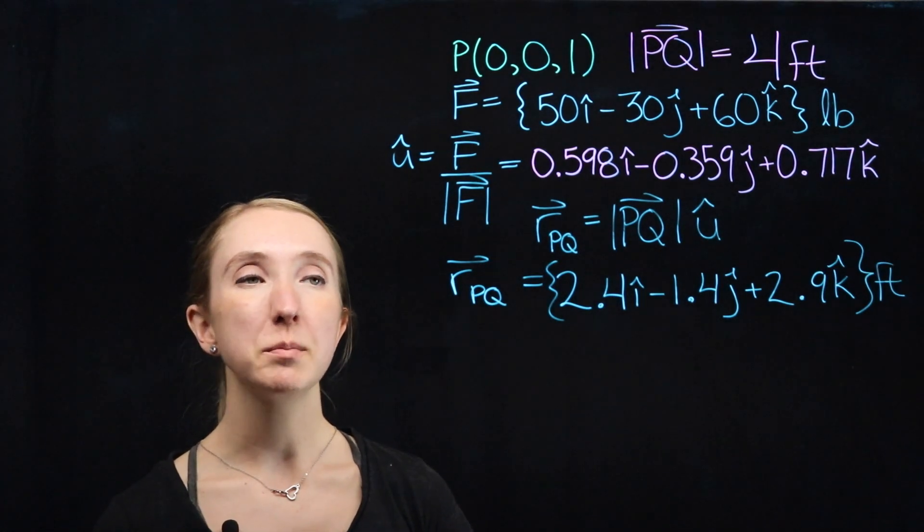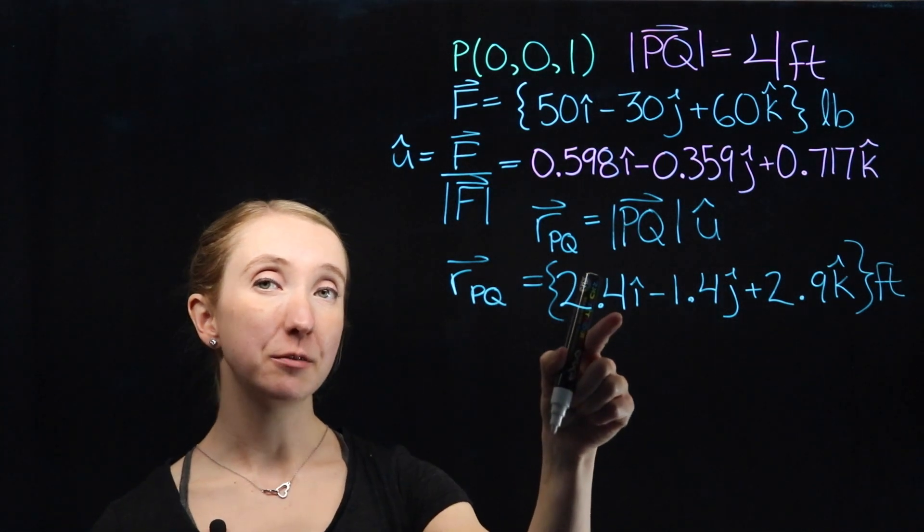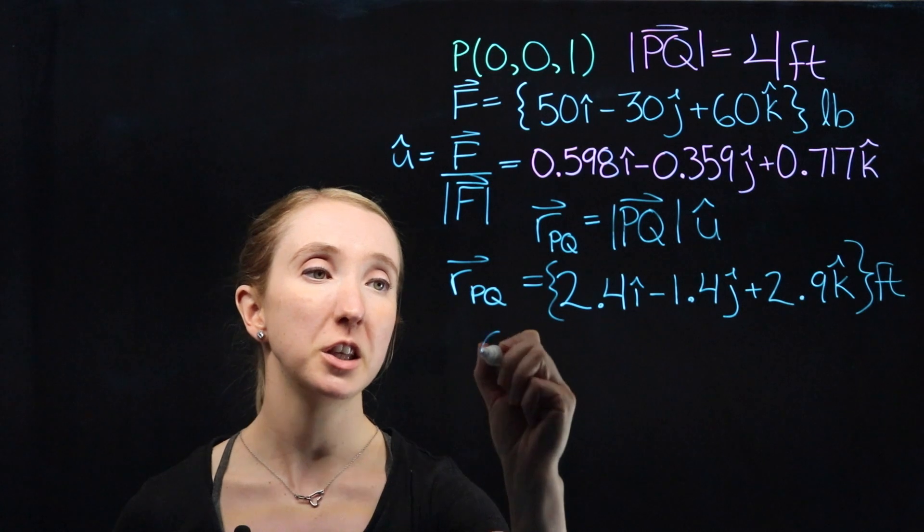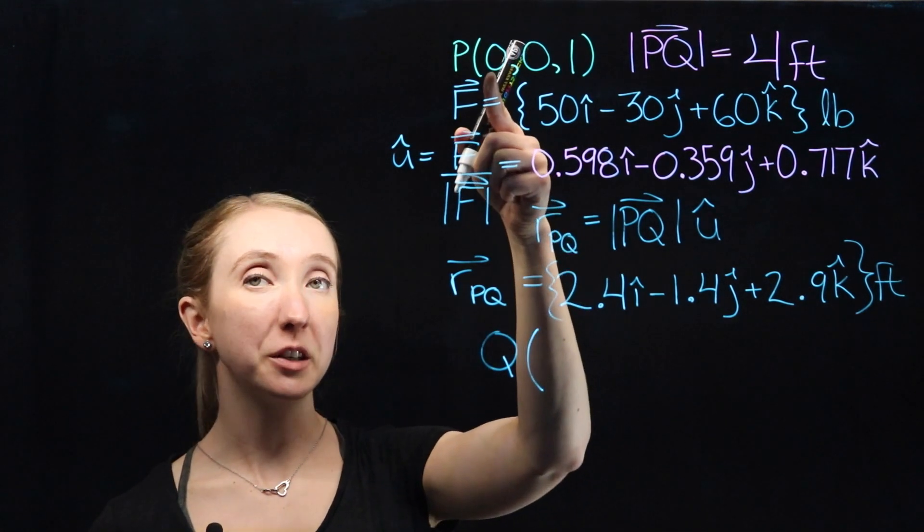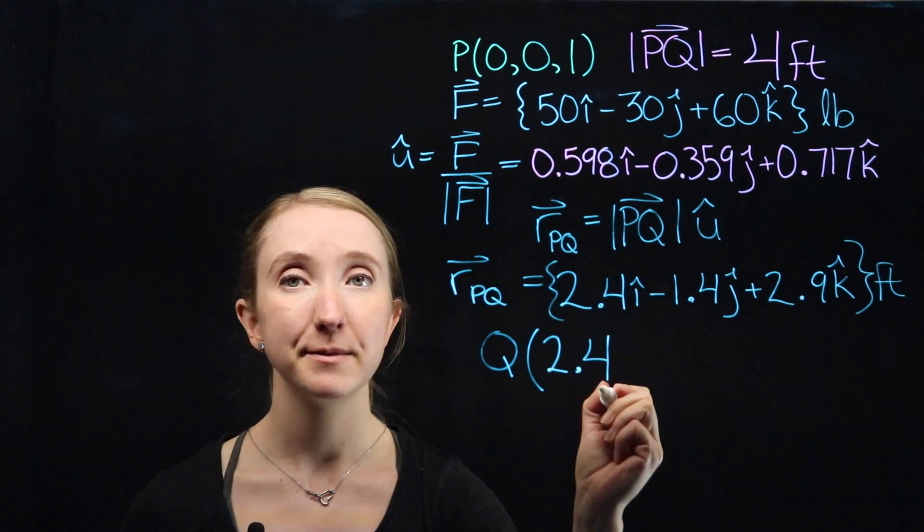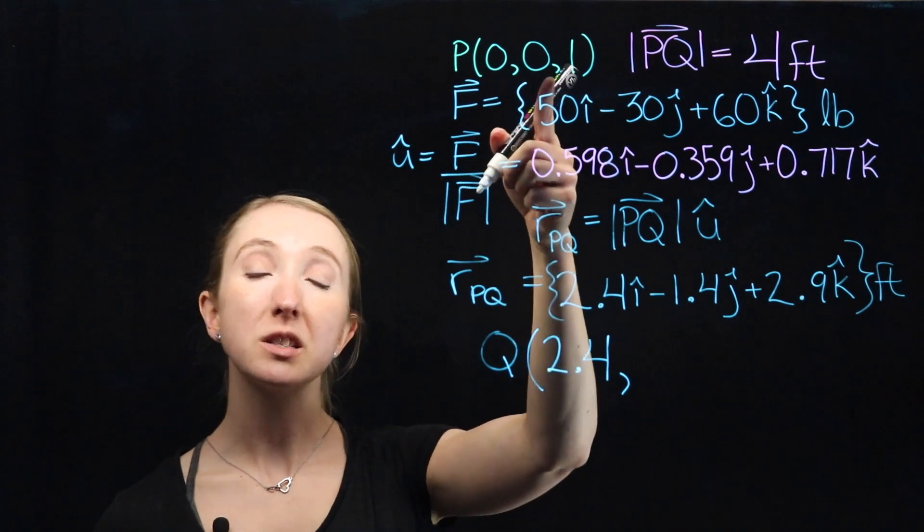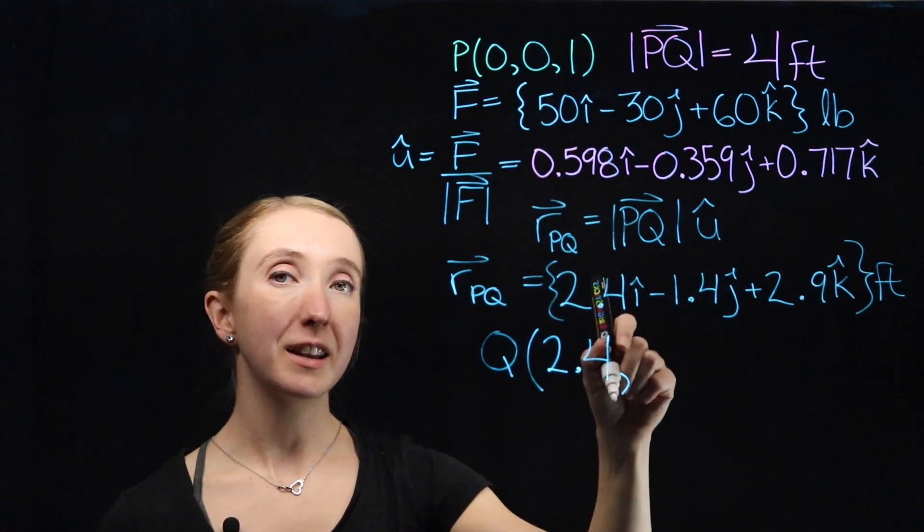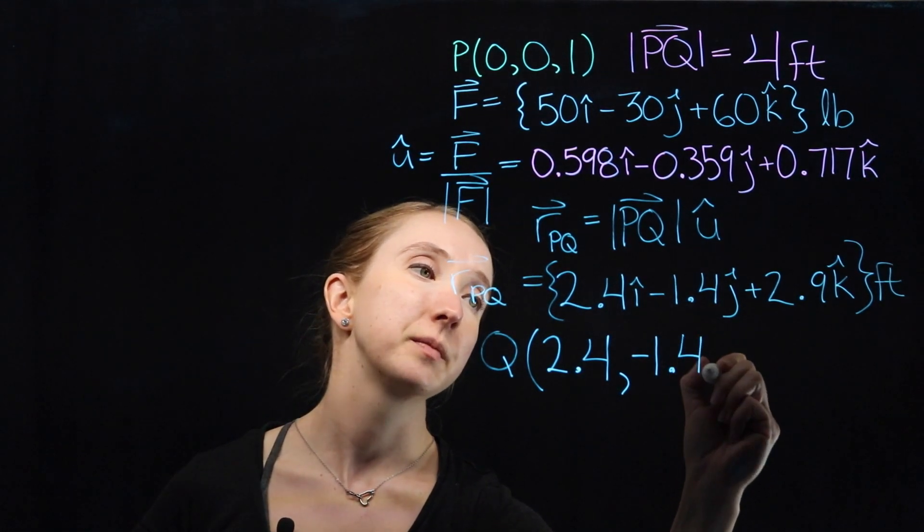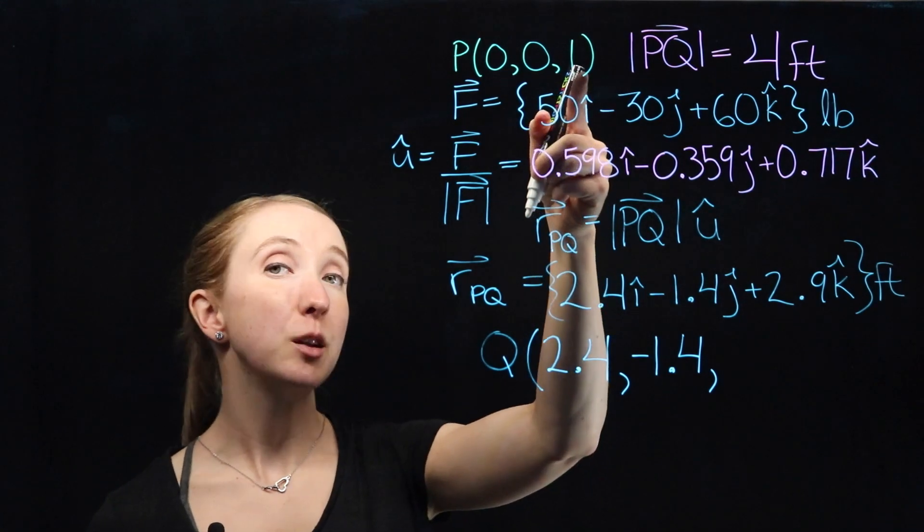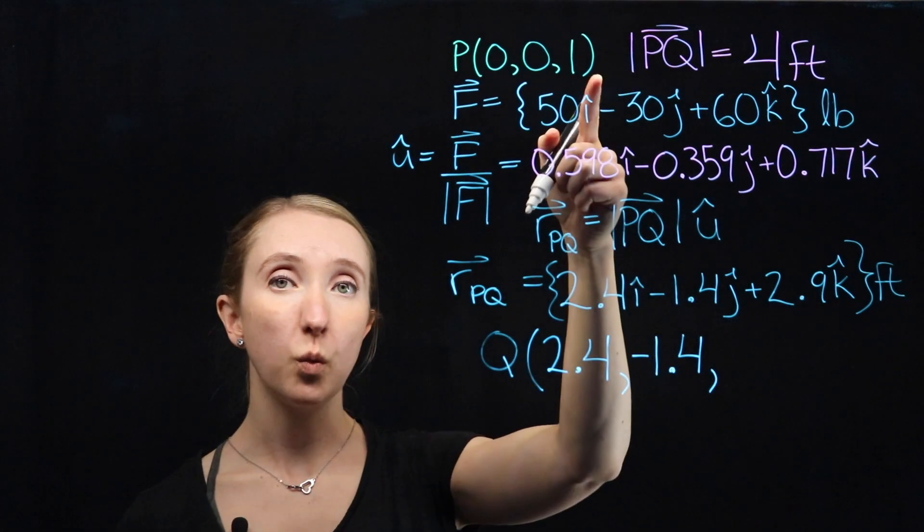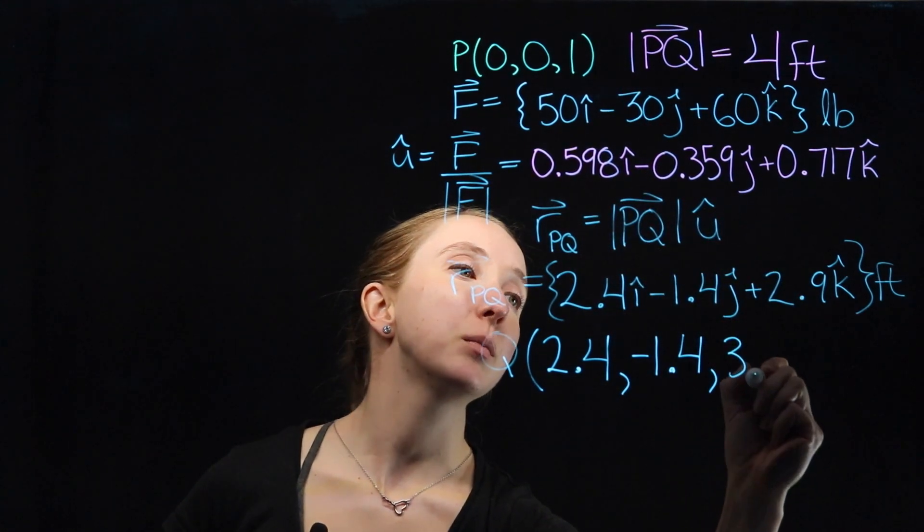Our position vector tells us where point Q is relative to point P. This says that from P to Q, we've moved 2.4 in the positive x direction. So finding the coordinates of Q... Since we started at an x coordinate of zero and we've moved in the positive direction by 2.4, our x coordinate would be zero plus 2.4, which is 2.4. For our y coordinate, we started at a zero and we moved 1.4 feet in the negative y direction. 0 plus negative 1.4 gives us a negative 1.4 y coordinate. For our z coordinate, we've started at positive 1 and we moved 2.9 feet up. That means that our z coordinate would be equal to 1 plus 2.9 for a total of 3.9 feet.